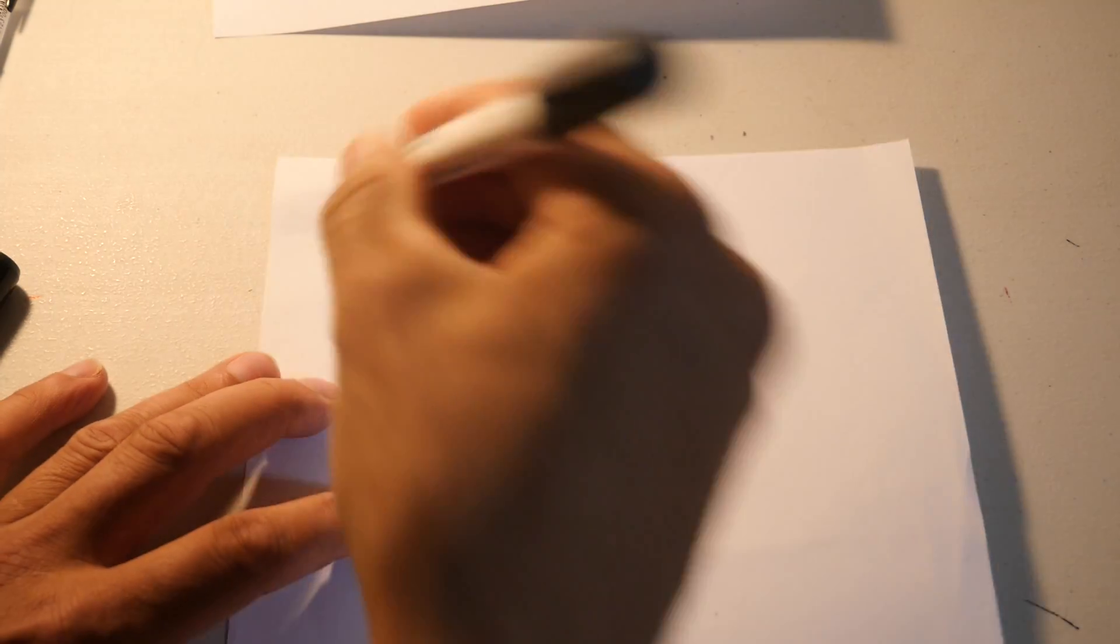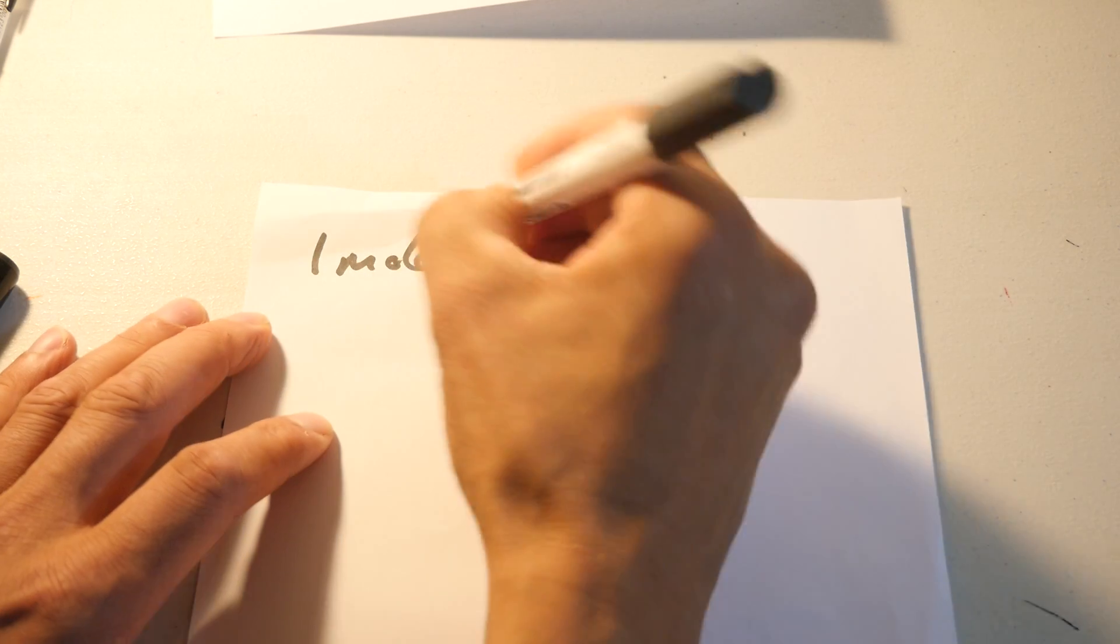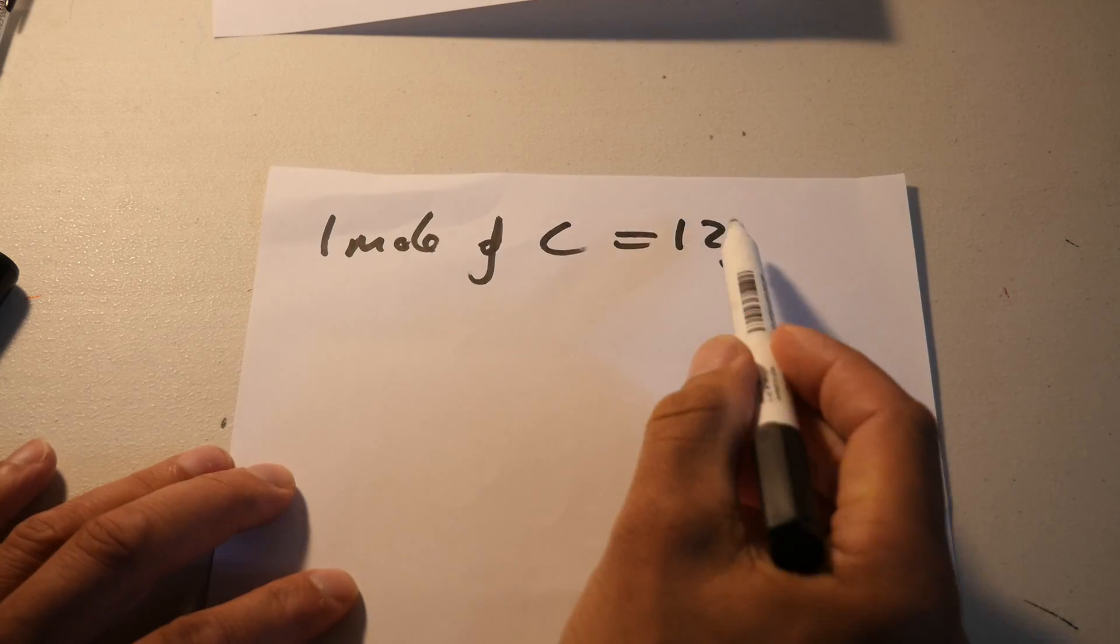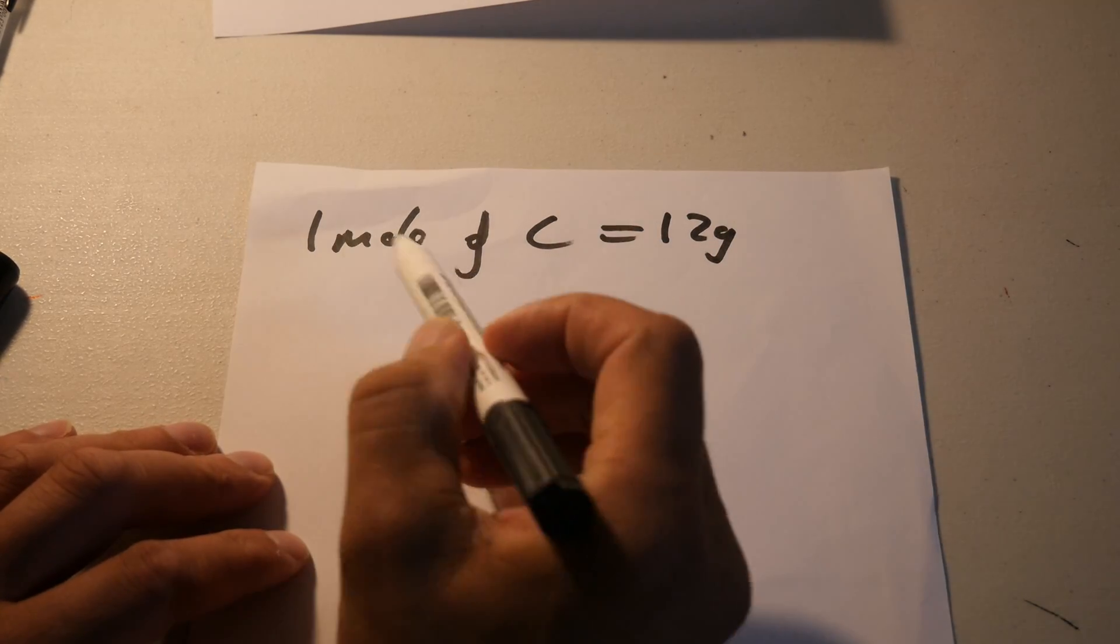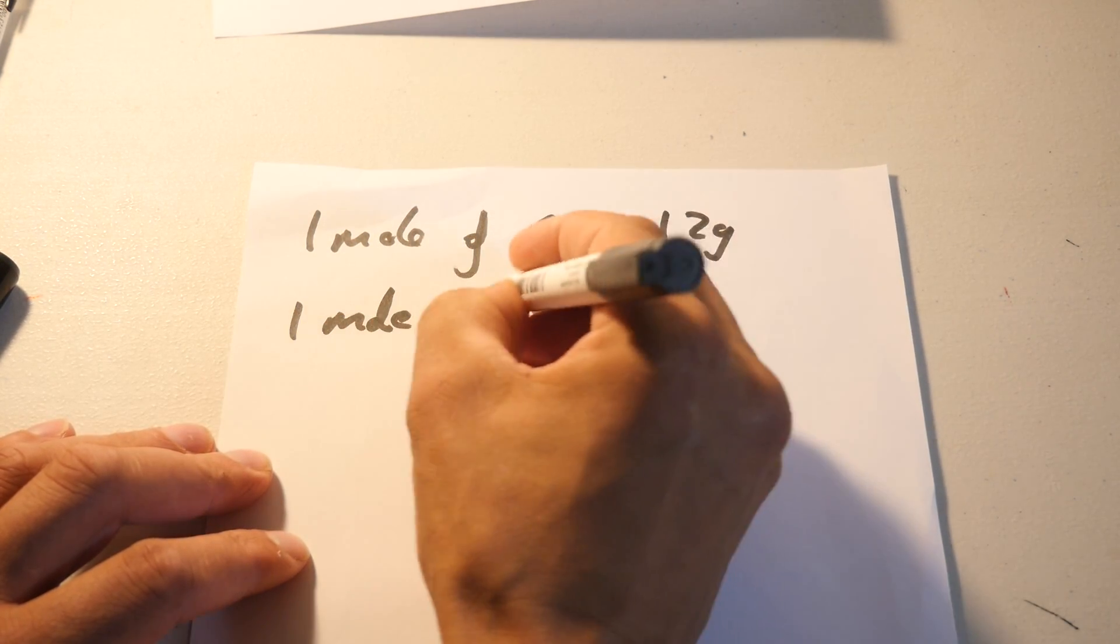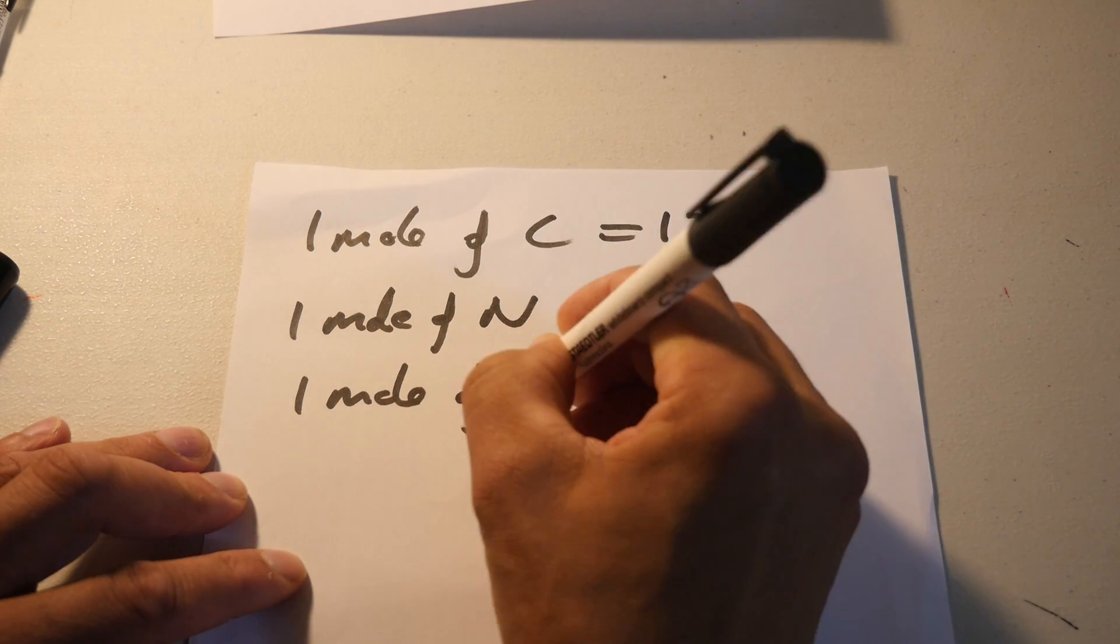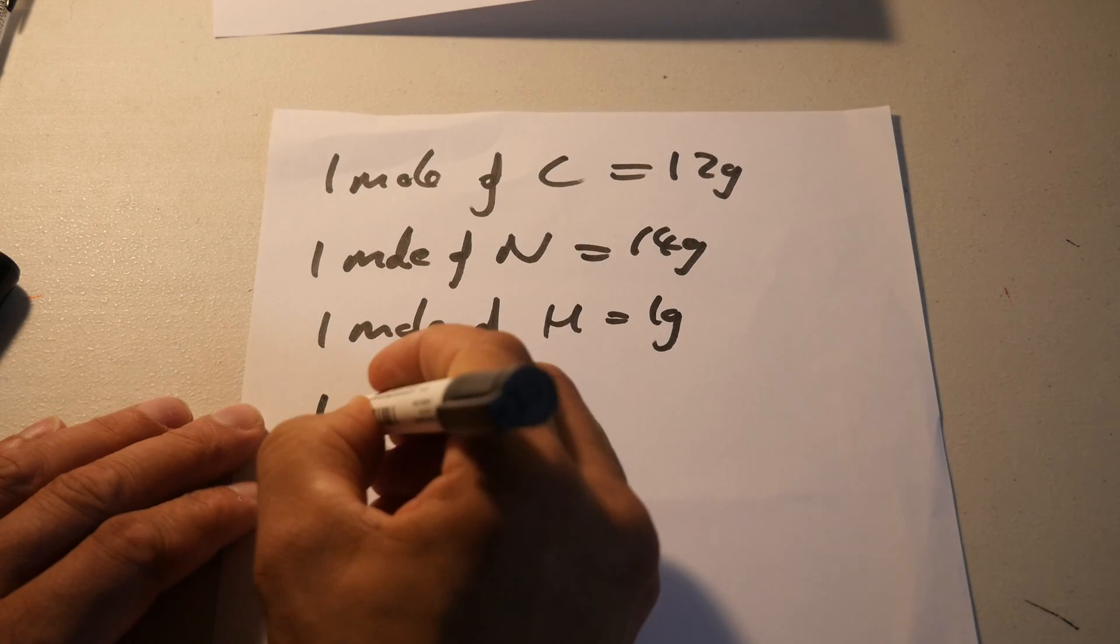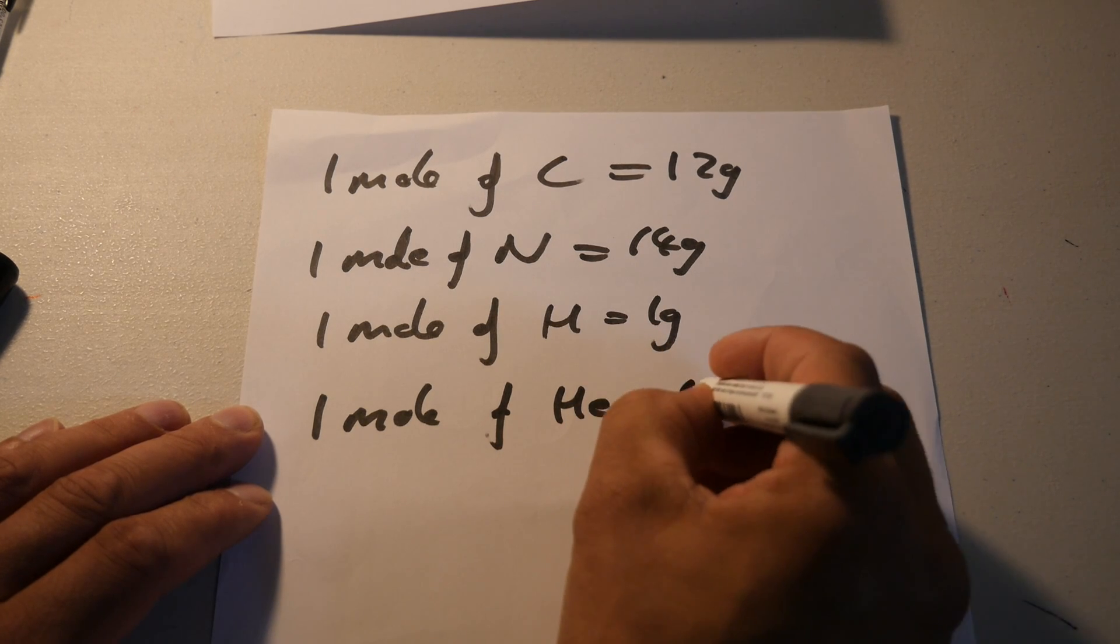1 mole of Carbon equals 12 grams. So use the mass of the atom. 1 mole of Carbon is 12, 1 mole of Nitrogen equals 14 grams, 1 mole of Hydrogen equals 1 gram, 1 mole of Helium equals 4 grams.